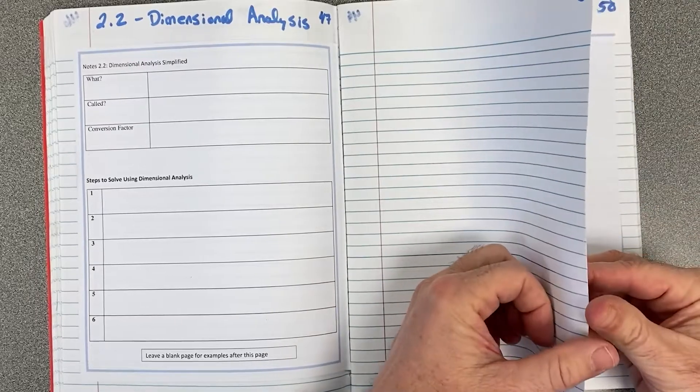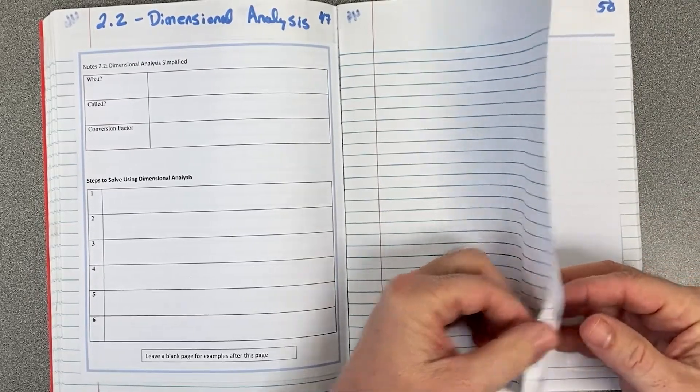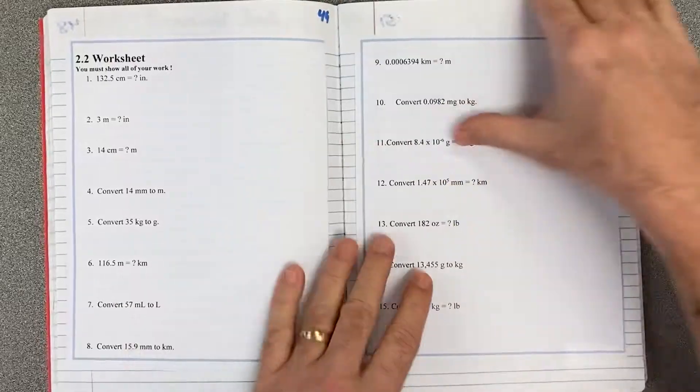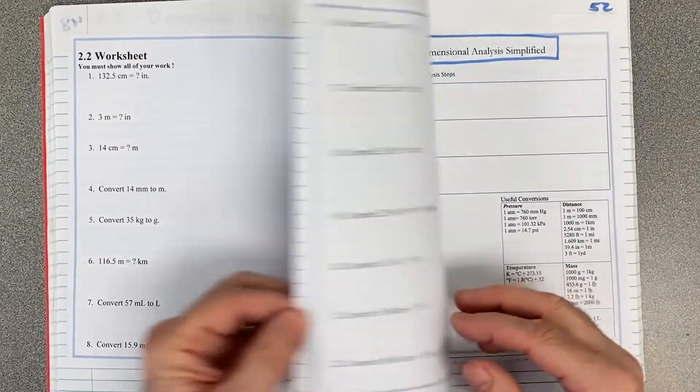So leave 48 blank so that you can take good notes. And then here's the 2.2 worksheet, one, two pages, three pages.